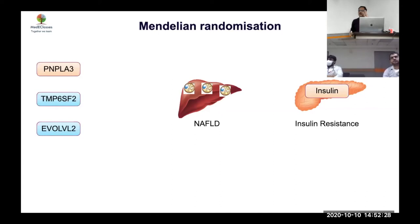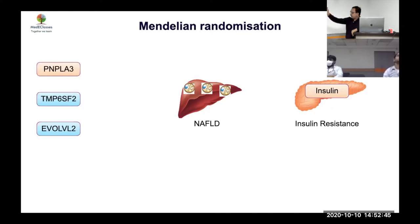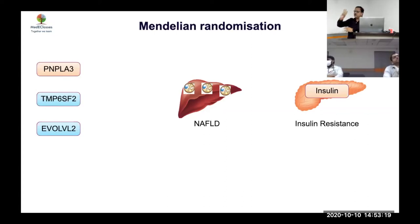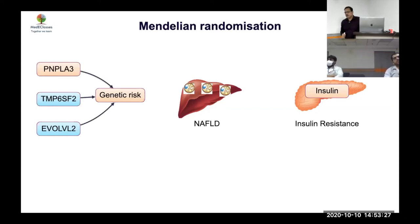Three particular genes, when varied in specific forms, pose a risk of developing fatty liver. These are not mutations per se — just single amino acid variations — but they confer risk. Importantly, these three genes are not linked with insulin resistance through other mechanisms. One gene, glucokinase, was removed because it predisposes to both fatty liver and diabetes, which would confound the analysis.